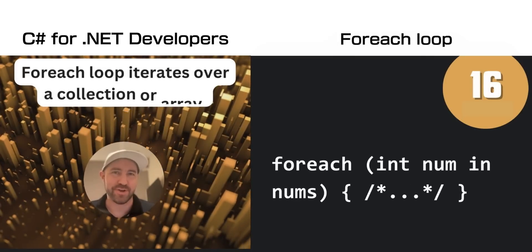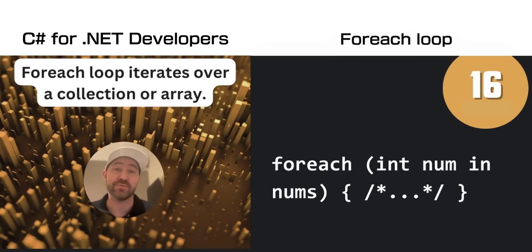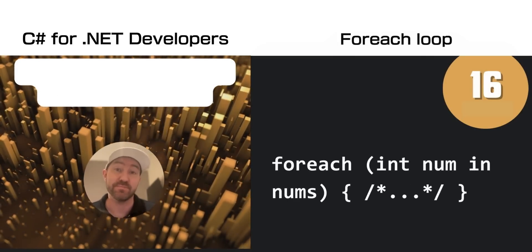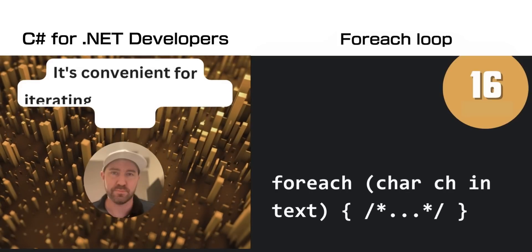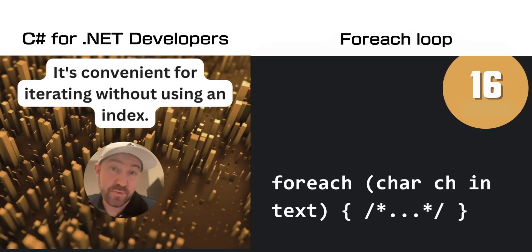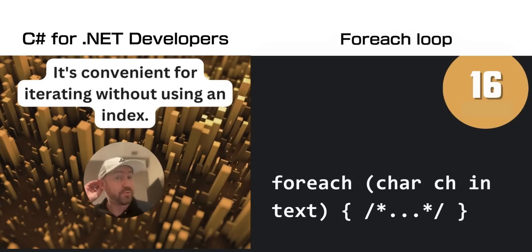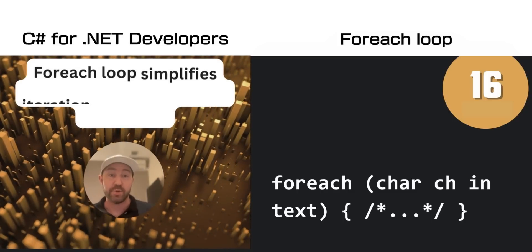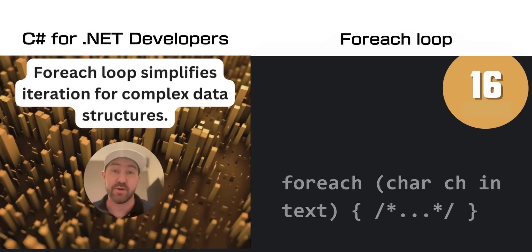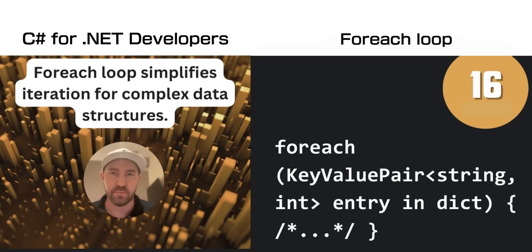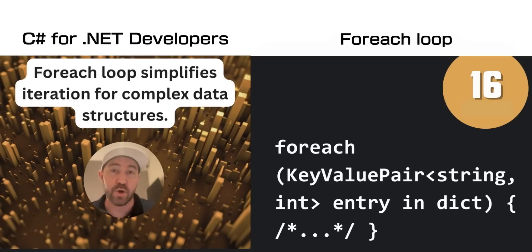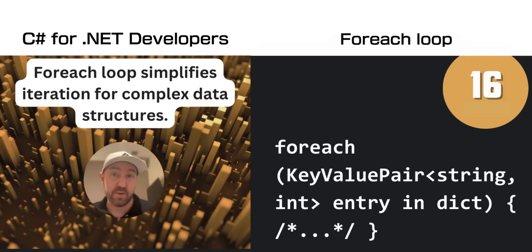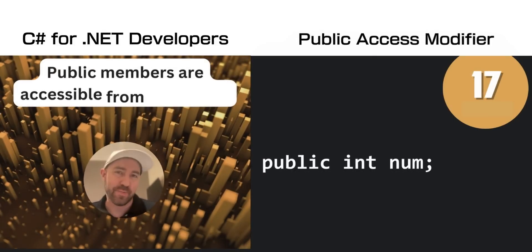My most favourite kind of loop — a for-each loop iterates over a collection or an array of items. It's really useful for going over an array or a collection without using an index. For example, you can go over every character in a text string. It can even go over complex data structures such as a dictionary type, as you can see above.